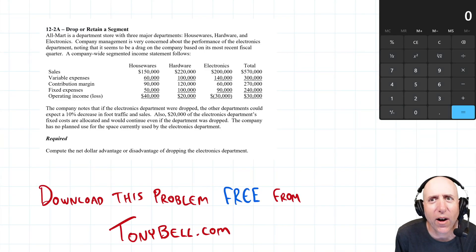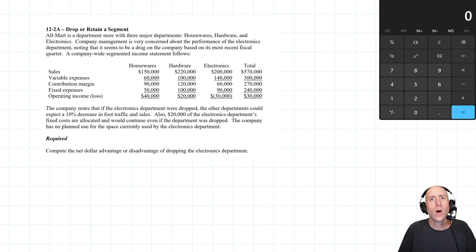Let's jump into problem 12-2a: Drop or Retain a Segment. A common financial dilemma that companies find themselves in is they've got one division, one arm, one branch, one part of their company seems to be struggling. And the question is, when should we stop doing that thing?